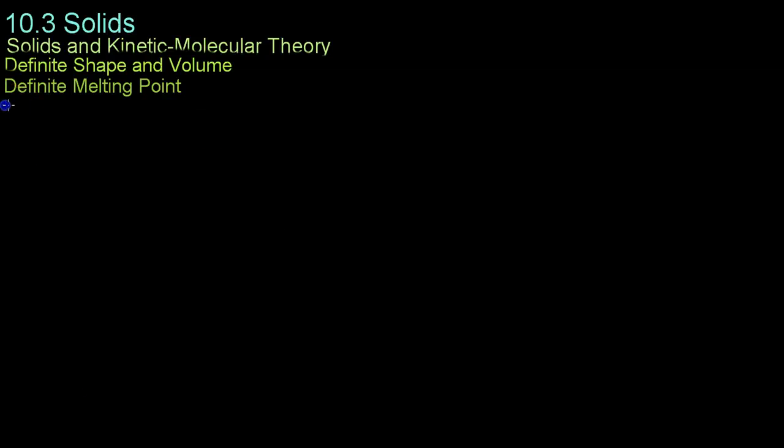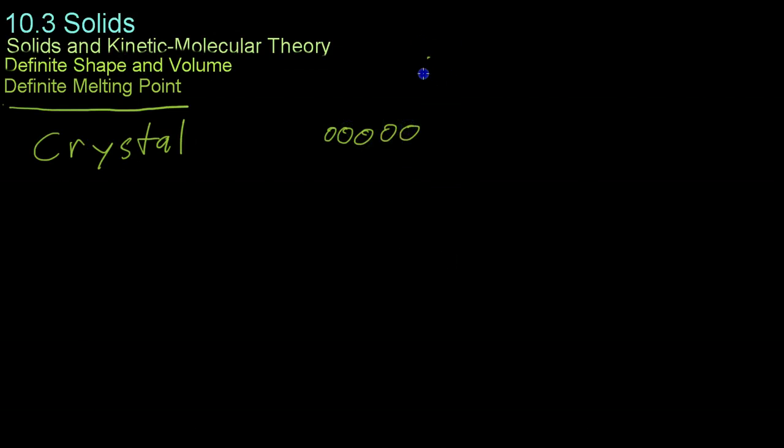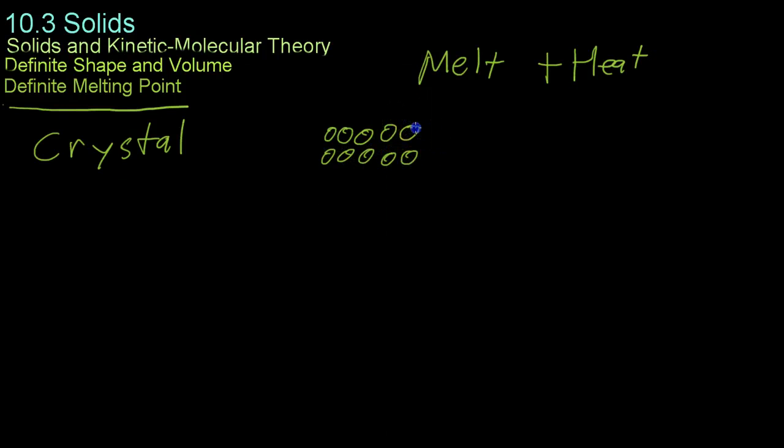A second property of solids is the definite melting point. This applies more to crystalline solids than amorphous solids. This is because crystalline solids, when you melt them, when you add enough heat, the molecules eventually gain enough kinetic energy to break out from the bonds that are holding them together and begin to flow past one another, much like in a liquid.